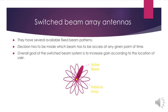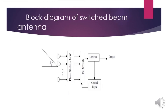The switched beam array antenna has several fixed available beam patterns. A decision is made as to which beam to access at any point in time, with the overall goal of increasing gain according to the location of the user. Its block diagram includes a phase switching network, RF switch, detector, and control unit.